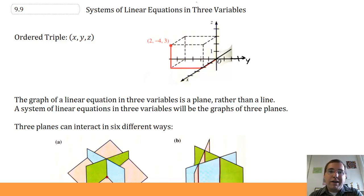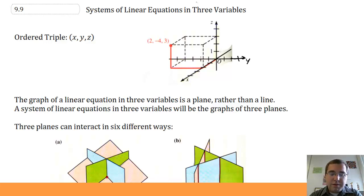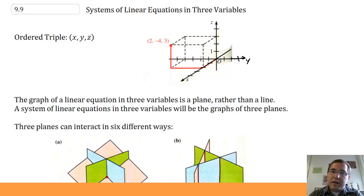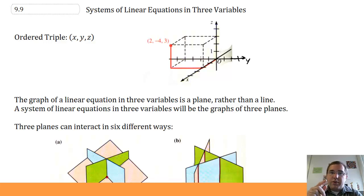This is section 9.9 of Anders Algebra 2, Systems of Linear Equations in Three Variables. We've done systems of equations in two variables, now we have three variables. So instead of just x and y, we have x, y, and z. And so instead of an ordered pair, we have an ordered triple.